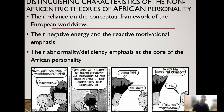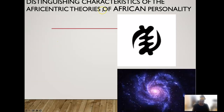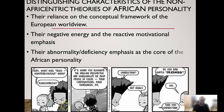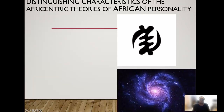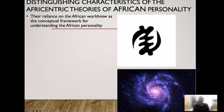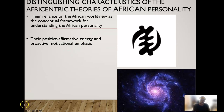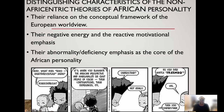Non-Afrocentric theories emphasize abnormality and deficiency as a core of African personality. When we deal with abnormality and deficiency as a core, we are already at a deficit. Many theorists argued that the African personality is centered around negative outcomes or cannot progress past the enslavement time period and the impact of enslavement.